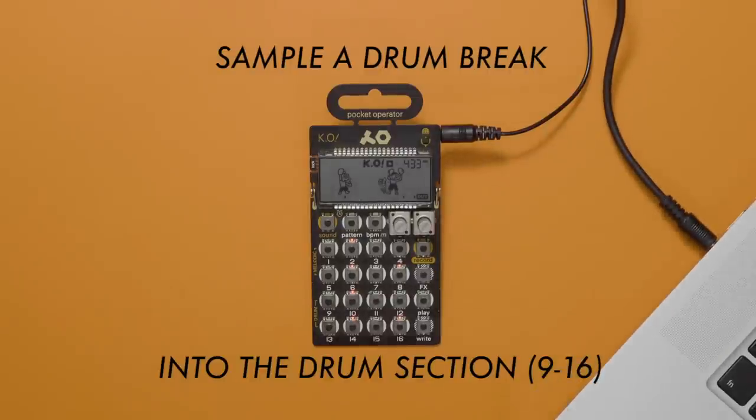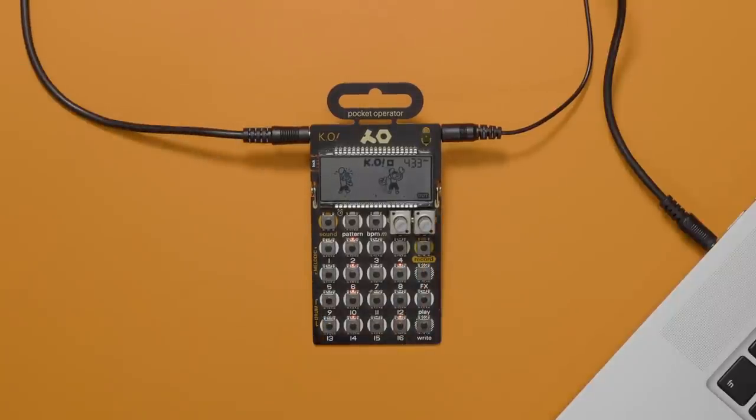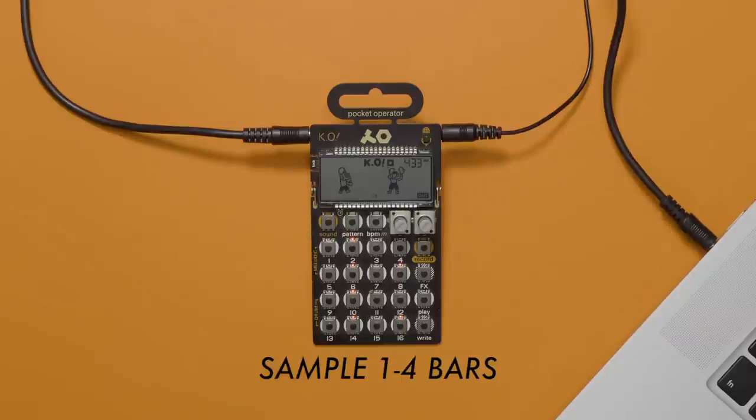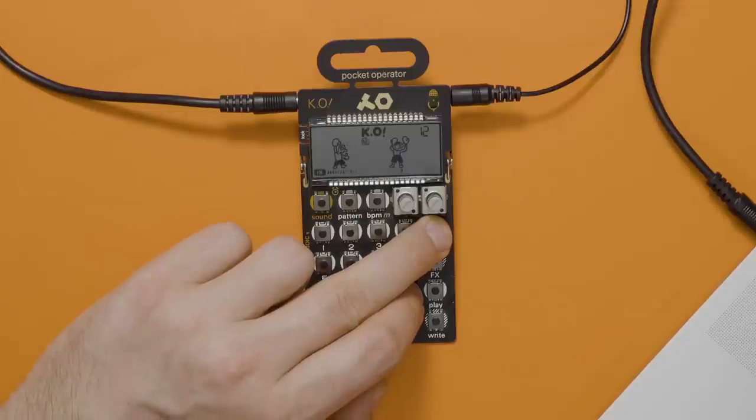Okay, let's start by sampling something. If we sample a drum break into this drum section, we can see how this feature traditionally works. Sampling two bars should help our slices fall evenly into 16 steps. Hold record and select the sound slot from 9 to 16 just past two bars.